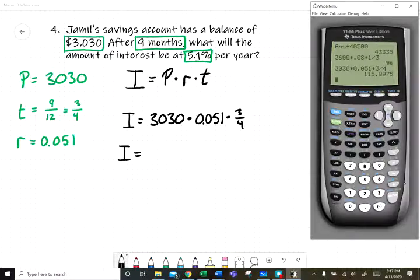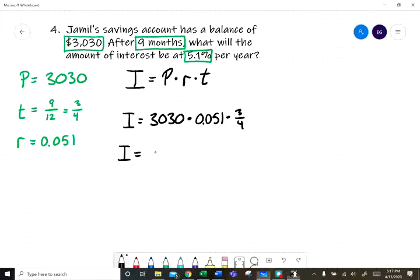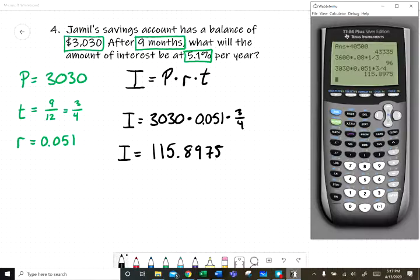Okay, so now we have a decimal here. Since we're talking about money, you always, unless the directions state otherwise, round to two decimal places. That's the nearest penny. So we have $115.8975.